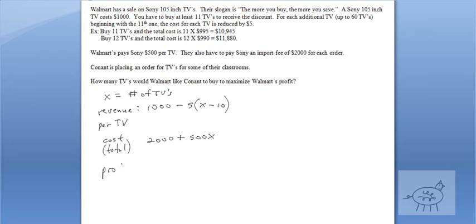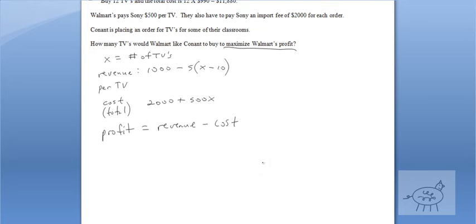Let's talk about our profit now. Because that's what I'm trying to do. It says, how many TVs would Walmart like Conan to buy to maximize Walmart's profit? So maximize Walmart's profit. So obviously we're maximizing. Okay, so let's just kind of keep that in mind. So profit is equal to, let's talk about, it's revenue. Let's write that. Revenue minus cost. All right, that's your profit. Okay, so we're going to profit. And our revenue is $1,000 minus 5 times X minus 10. Now, if you remember from yesterday, the examples, that's profit for one. That's why I put per TV. So it's times X, because X number TVs, okay, minus 2,000 plus 500X.